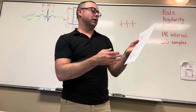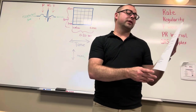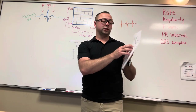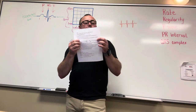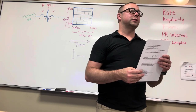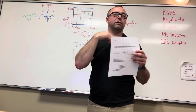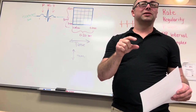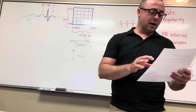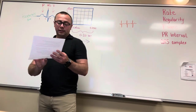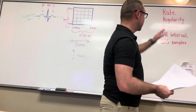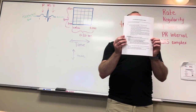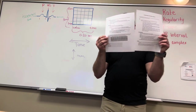EKG rhythms are interpreted using the six-second strip. We don't interpret rhythms with a 12-lead — 12-leads are for diagnosing. Diagnosing heart attacks, left ventricular hypertrophy, pericarditis, different things like that. If you have the single line, that's your six-second strip for interpretation. The 12-lead is for diagnostics.